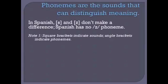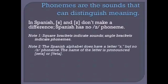Just a couple of quick side notes. You'll see me indicate sounds sometimes in square brackets and sometimes in angle brackets. The square brackets indicate the actual sounds — the phonetic articulation. The angle brackets indicate phonemes, that is, the idea of the sound in our heads. You don't need to use them consistently yourself, but I want you to know what I'm doing when you see them. Also, the Spanish alphabet does have a letter Z, but there's no Z phoneme. In fact, the letter is pronounced 'Zeta,' or if you're from Spain, 'Theta' — so saying 'Zeta' will make you sound like you have an English accent.